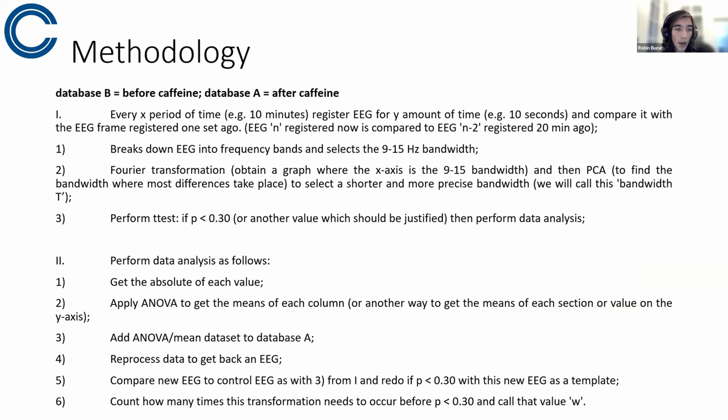So the main way that this algorithm would work, which I'm developing right now would be, well, so we have database B and database A with B being before caffeine and A being after caffeine. So in first instance, we'd have every X period of time, for example, 10 minutes, register the EEG of this patient for Y amount of time, for example, 10 seconds, and compare it with the EEG frame registered one set ago. So EEG N registered now is compared to EEG N minus two registered 20 minutes ago.